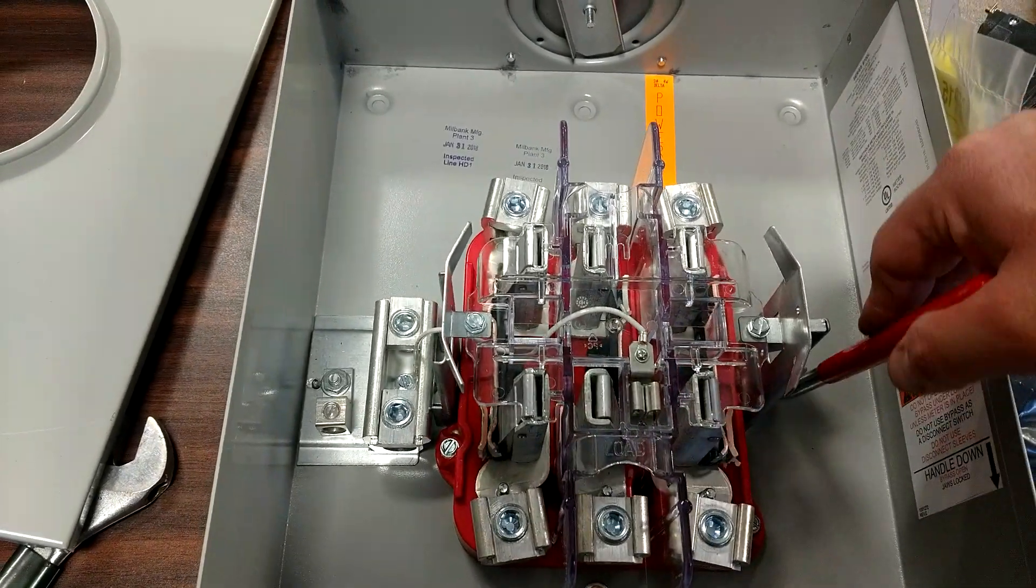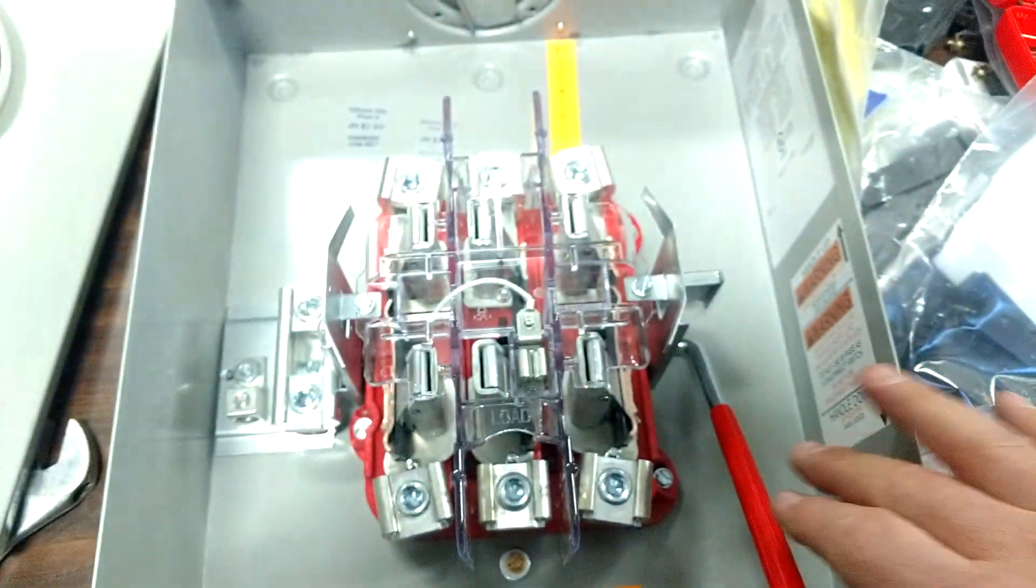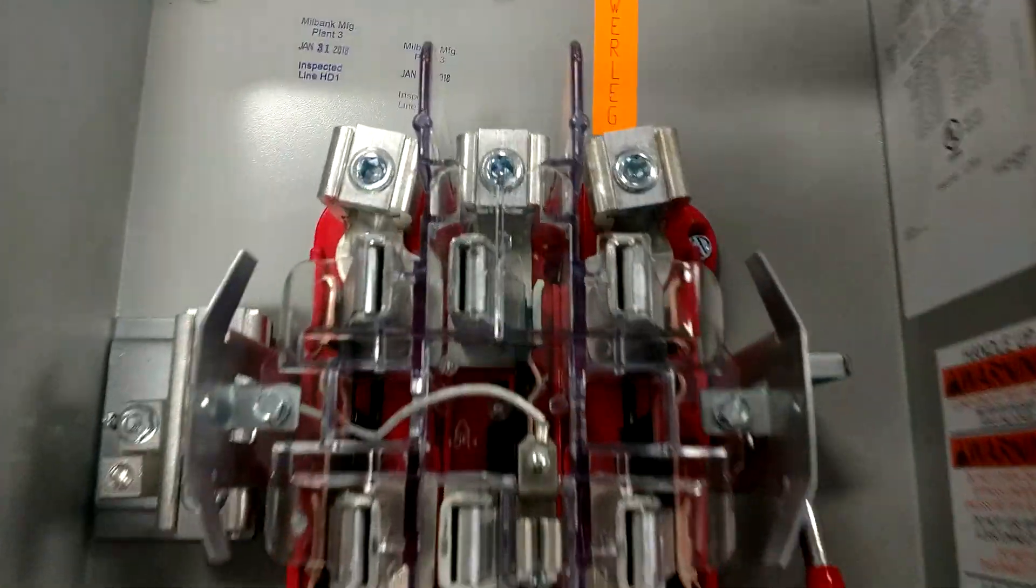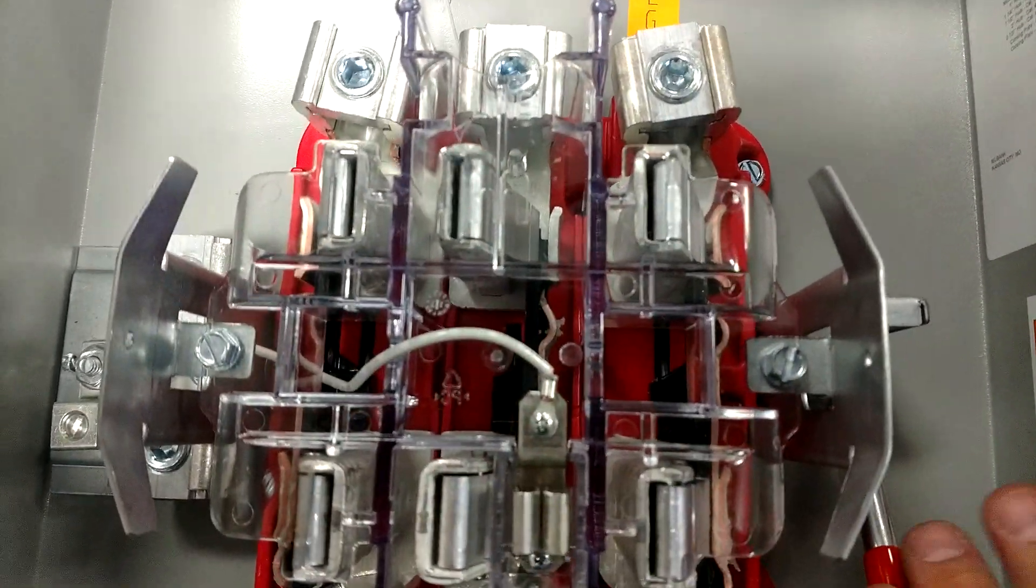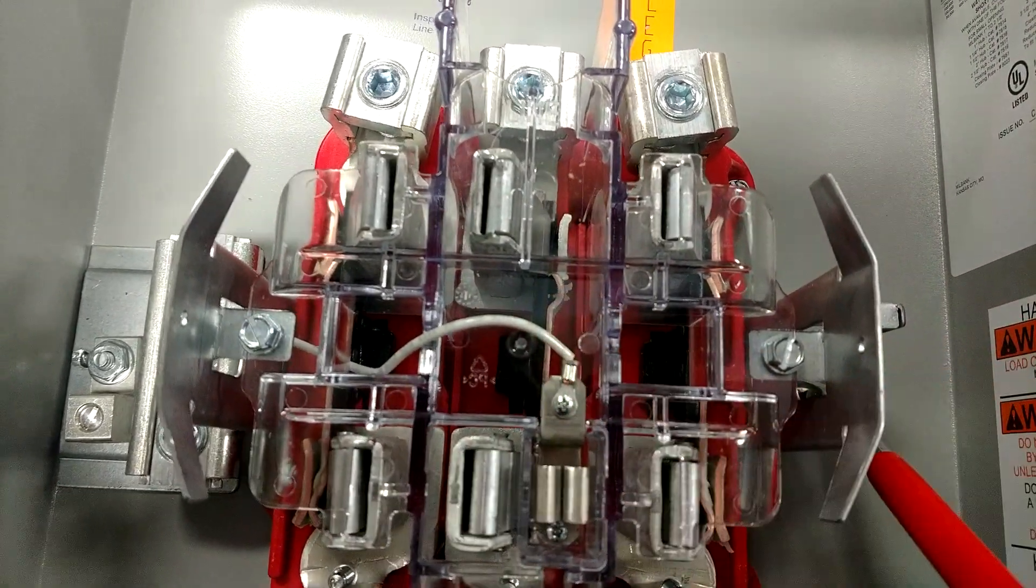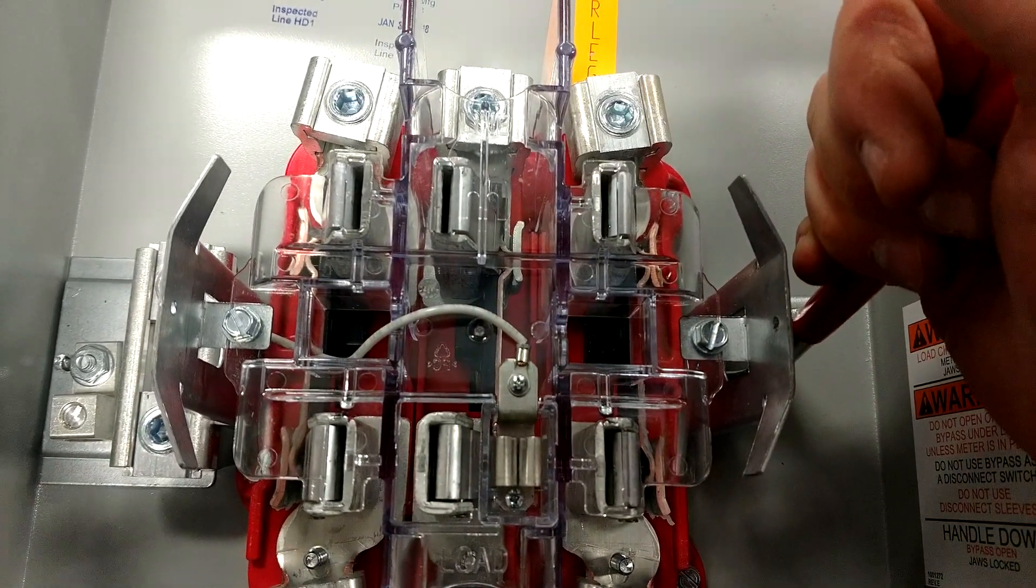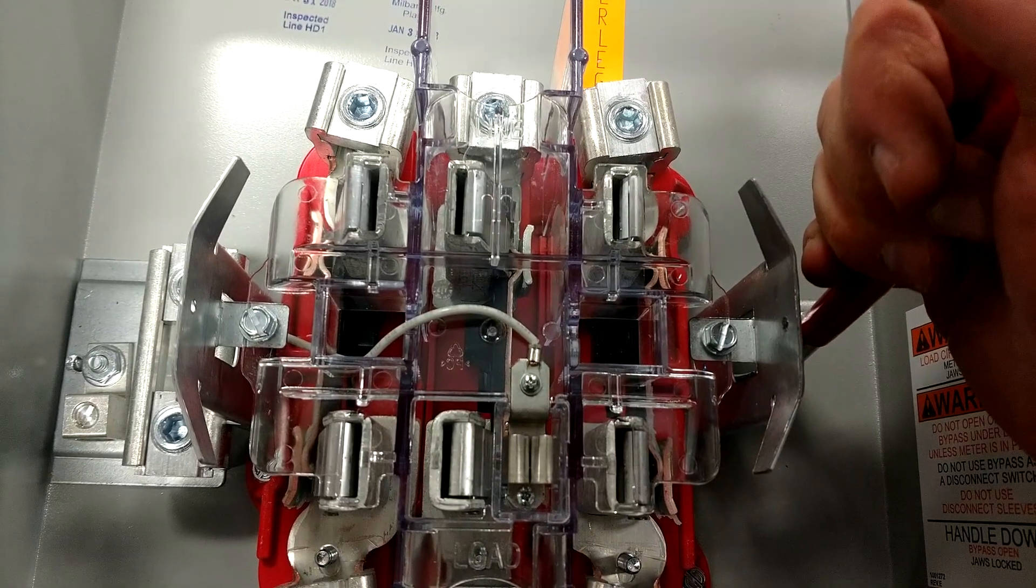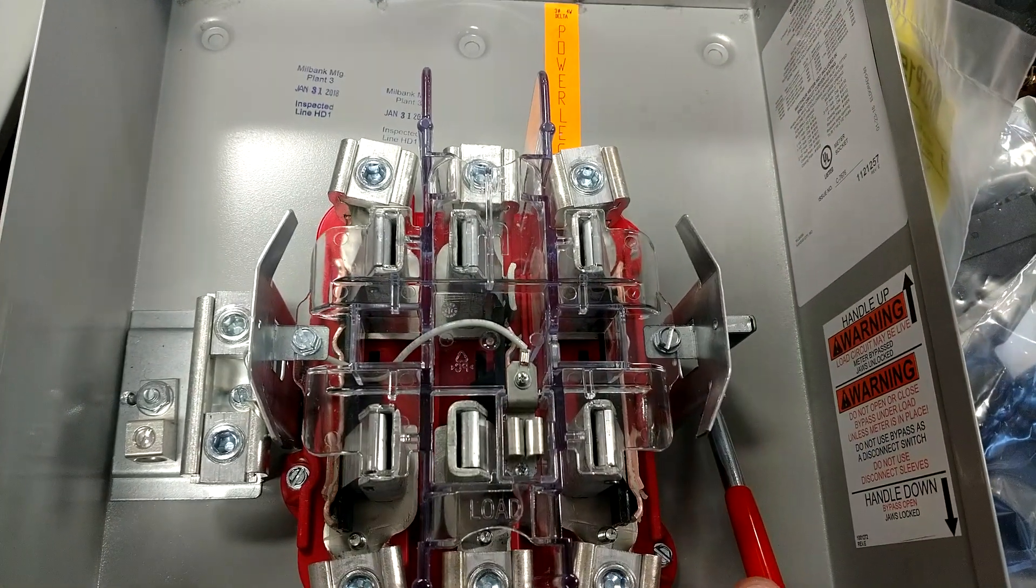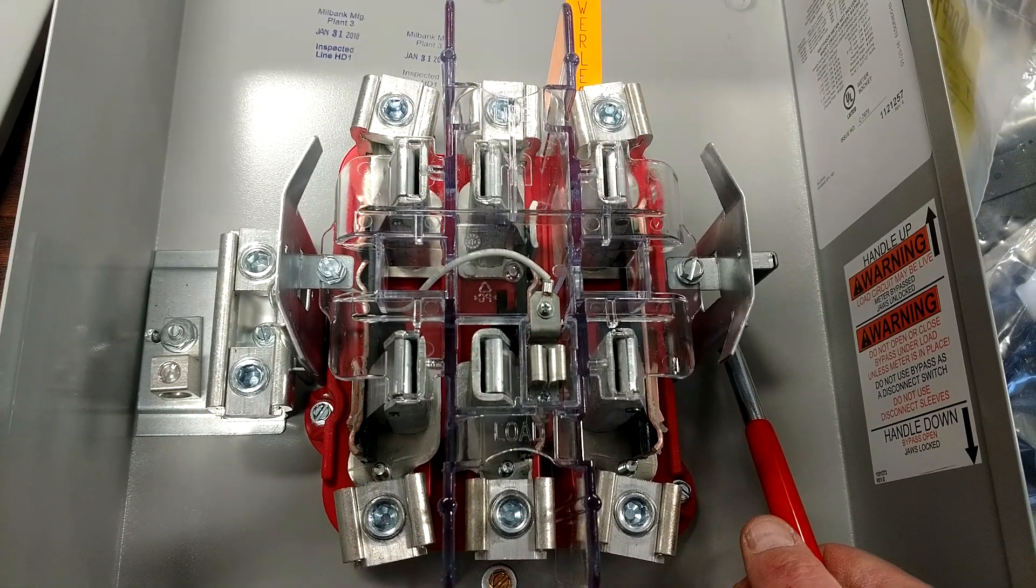You've got to have the bypass handle so that when the power company goes to disconnect the meter, they can do so with it not being under load. This bypass - maybe you can see those little switch contacts right in here - they're breaking and making all three of them. So now, when the power company goes to pull this meter out, they can switch the building off without having a load spark when they draw the meter out. It's called hot sequencing.